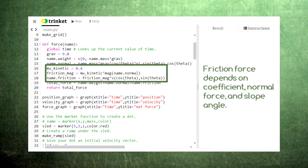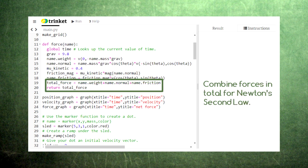Finally, we calculate the friction force using the coefficient of kinetic friction and the magnitude of the normal force. Notice that the friction also has components determined by the cosine and sine of the slope's angle. After calculating all these force vectors, we add them together in the total force, which will determine our sled's acceleration.